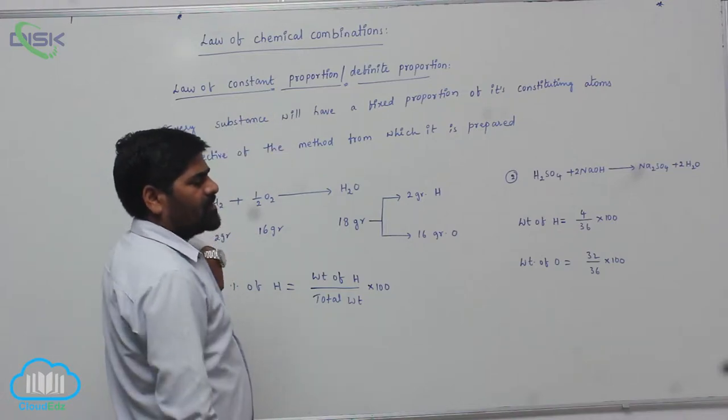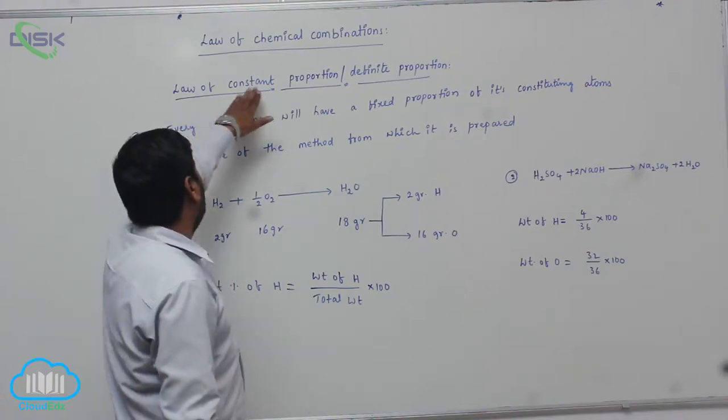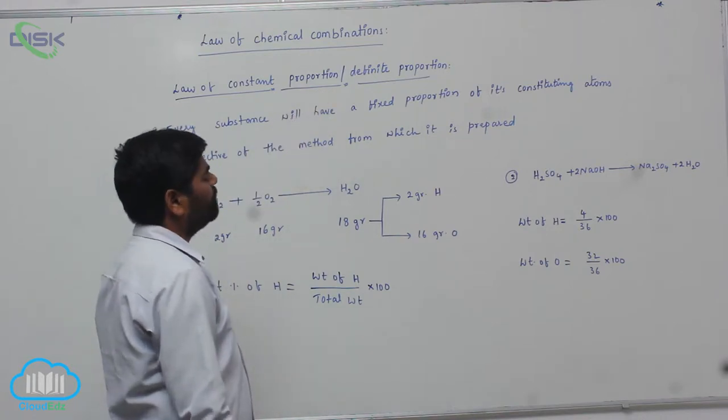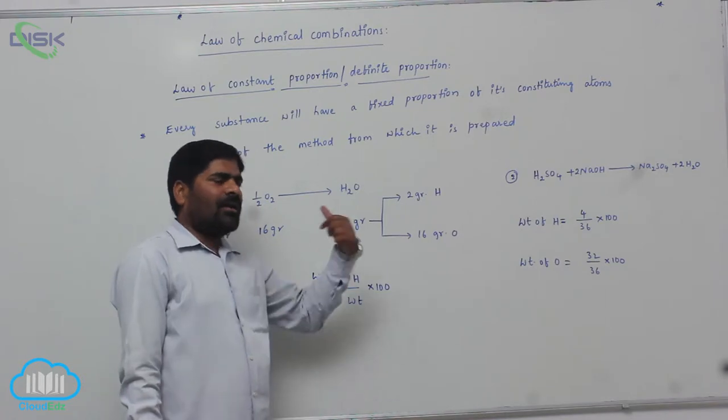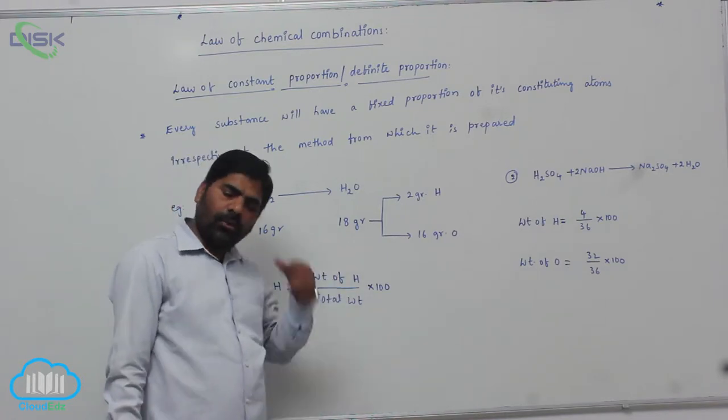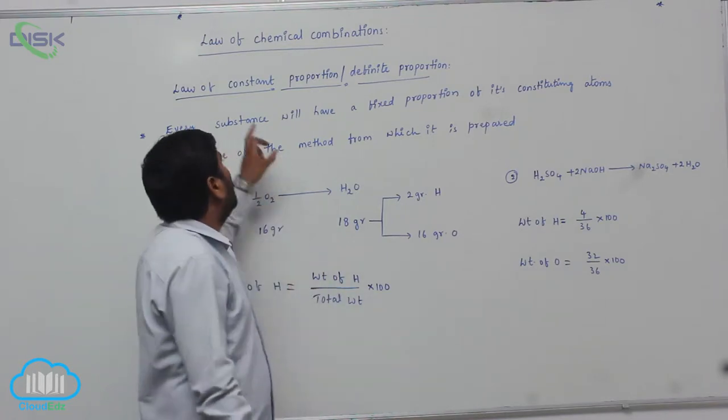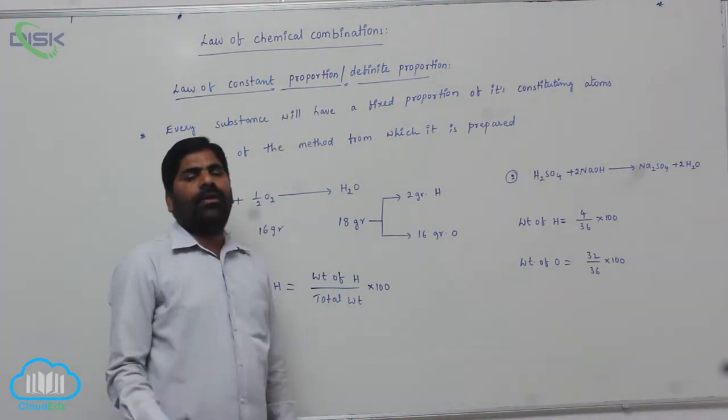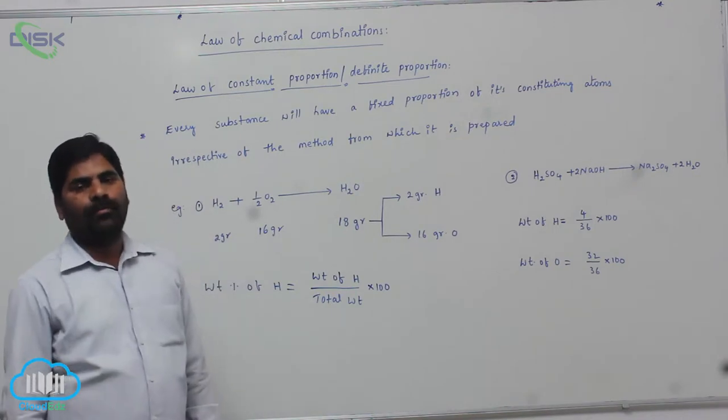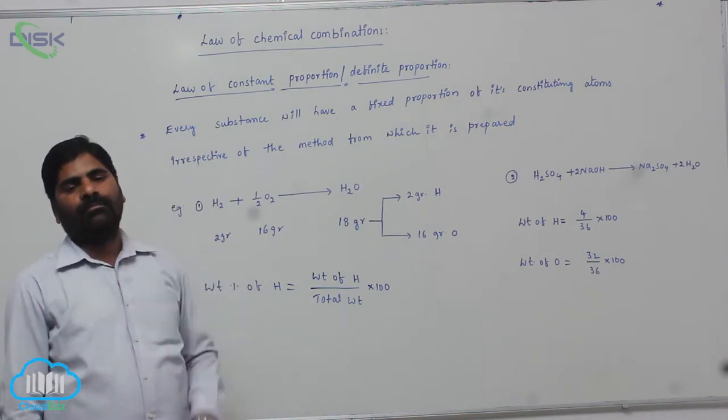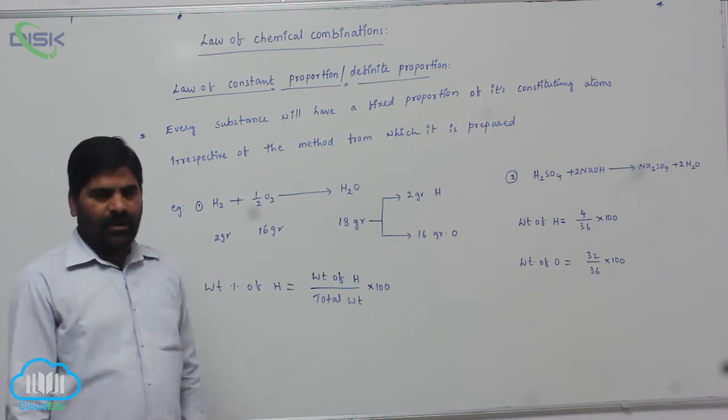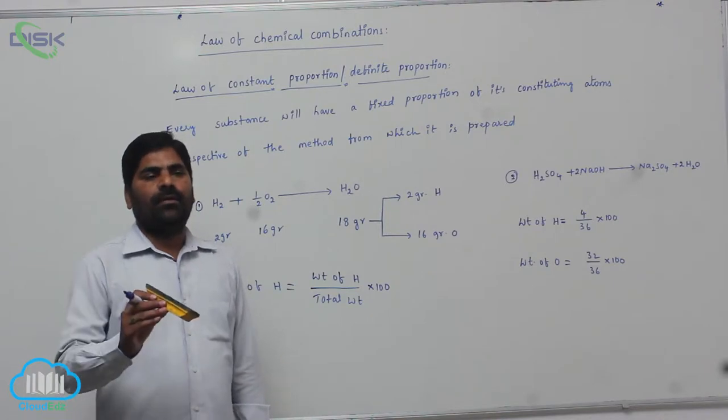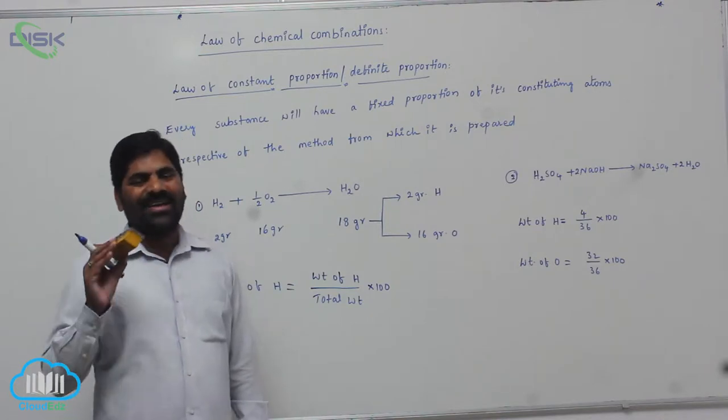The first law is law of conservation of mass, second one is law of constant proportion or definite proportion. According to this particular composition rule, definite proportion means if any chemical compound is formed from any one of the methods, its proportion is always constant.